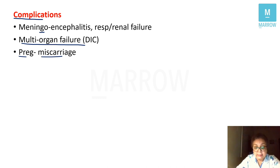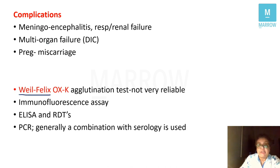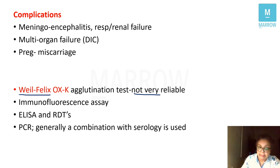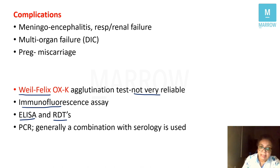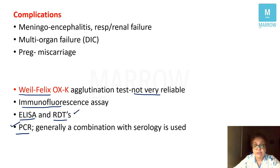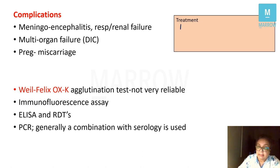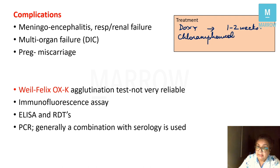For diagnosis of scrub typhus, we use the Weil-Felix reaction to detect OXK antibodies, though this is not very reliable. More specific serological tests include immunofluorescence assays, ELISAs, rapid immunochromatographic tests, and PCR — generally a combination of molecular and specific serological methods. Drug of choice for scrub typhus, as for most rickettsial infections, is doxycycline for one to two weeks. The alternative drug is chloramphenicol; in pregnant females, azithromycin is used.